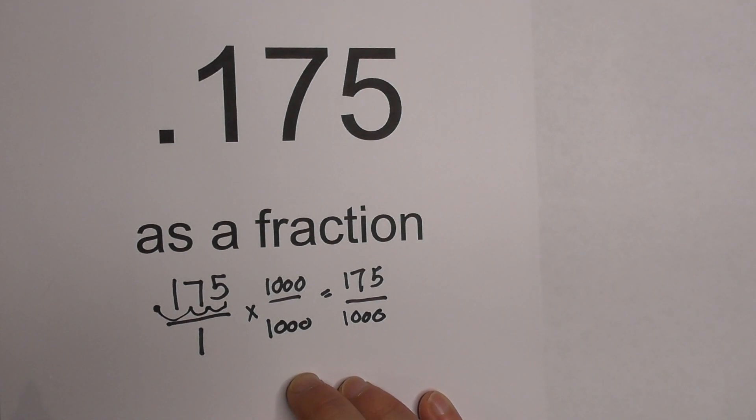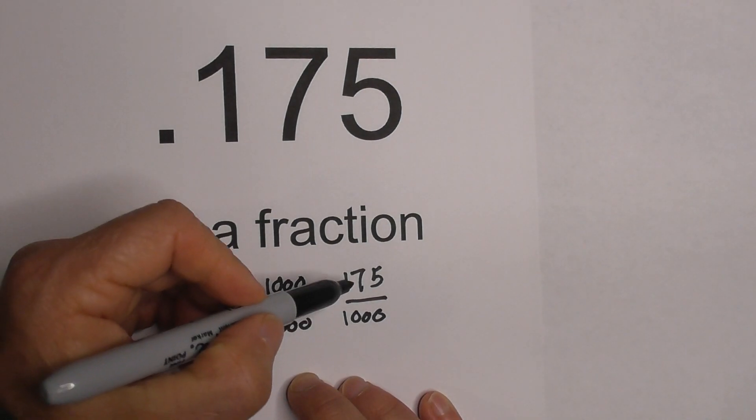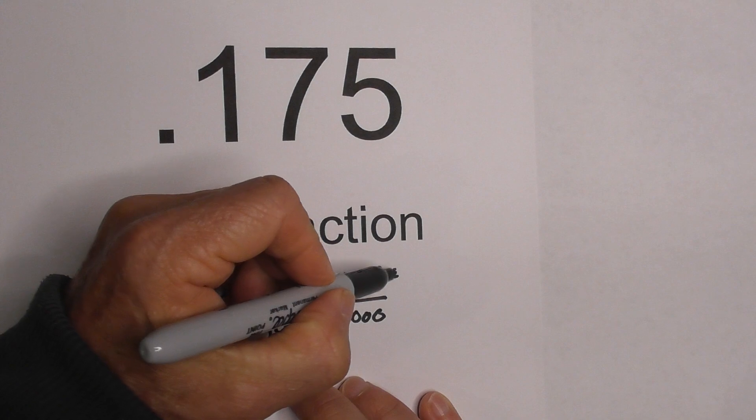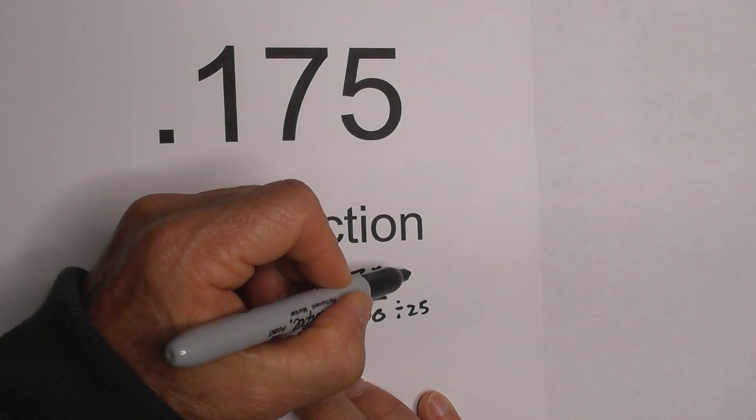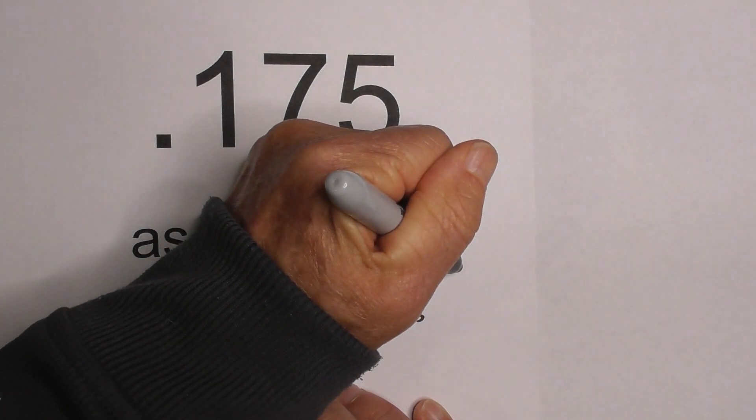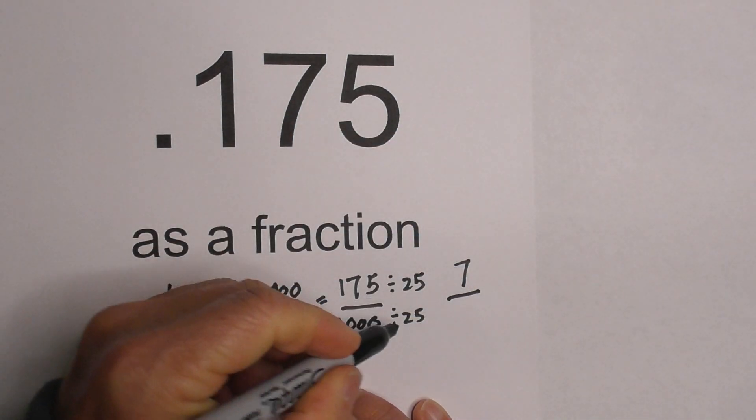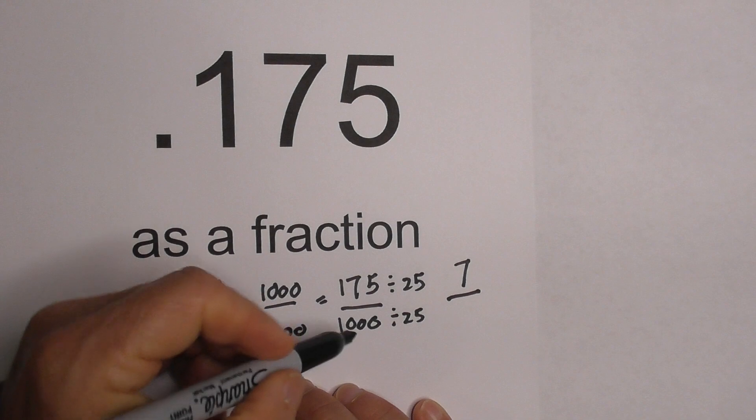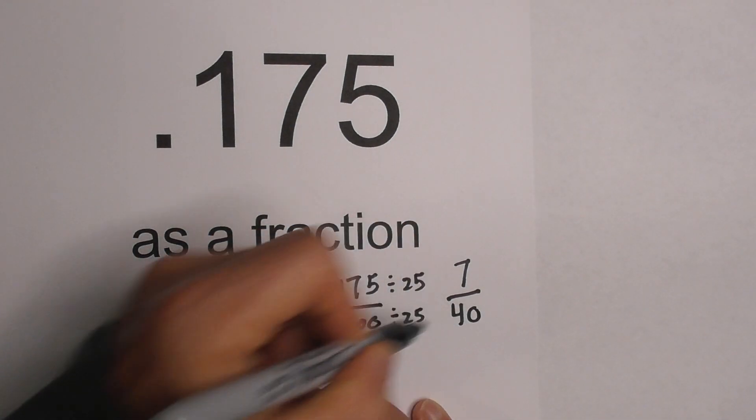So now we have a fraction, but we need to reduce it. And so I know that I can divide both sides by 25. So when you divide 175 by 25, that gives you 7. And then 25 goes into 1,000, 40 times.